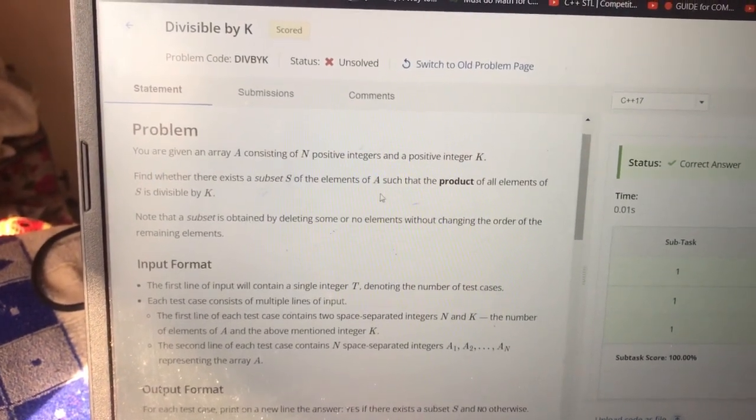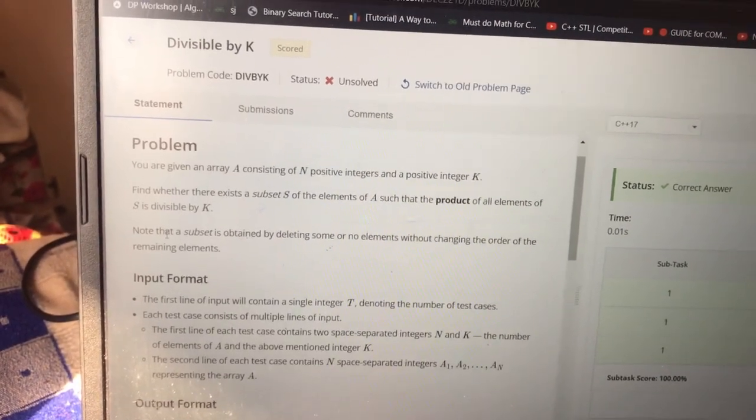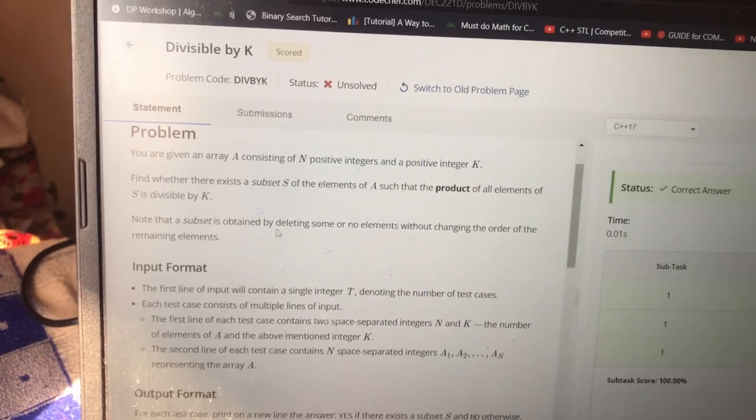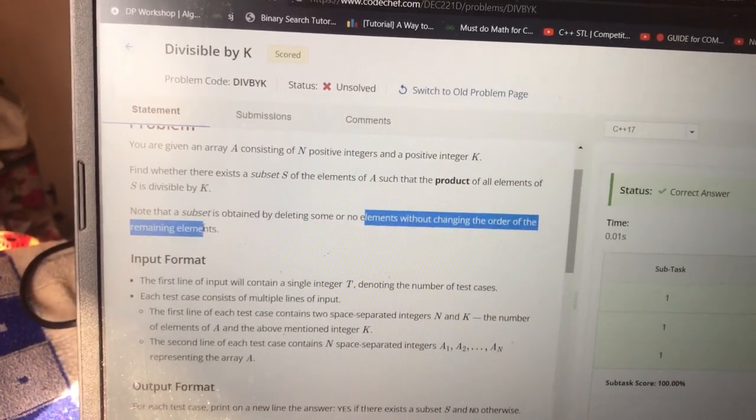So what it's saying is that the subset is obtained by deleting some or no elements without changing the order of the remaining elements.